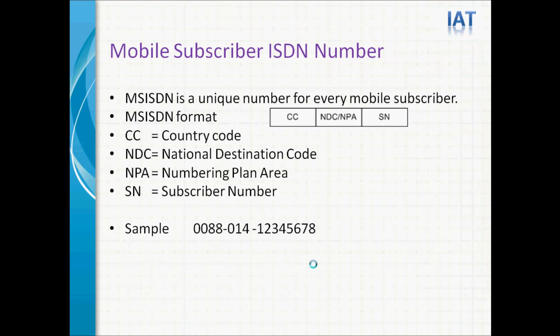Mobile Subscriber ISDN Number — MSISDN is a unique number for every mobile subscriber. The MSISDN format has three fields: CC is the country code, NDC/NPA is the national destination code or number plan area, and SN is the subscriber number. For example, 0088 is the country code for Bangladesh, 014 is the national destination code and operator code, and the last digits are the serial number.